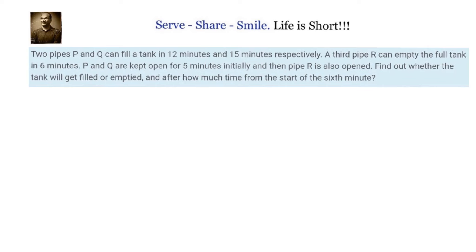So there are two pipes P and Q which are trying to fill the tank and there is another pipe R which is trying to empty the tank. Now first let's understand if P and Q are working together then they will try to fill the tank and R is emptying the tank. Who will do more work? That means if all the three are there P, Q and R, whether the tank will get emptied or filled.